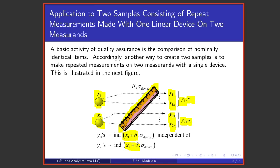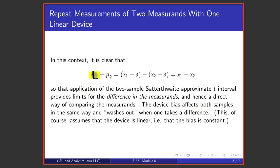And so it's pretty clear that by making a comparison of means one can actually compare the two measurands. That is mean number one minus mean number two is this difference and by the time one adds in and subtracts out delta one is left with simply the difference in measurands. That is device bias affects both samples in the same way and more or less washes out when one takes a difference assuming of course that the device is linear that its bias is constant.